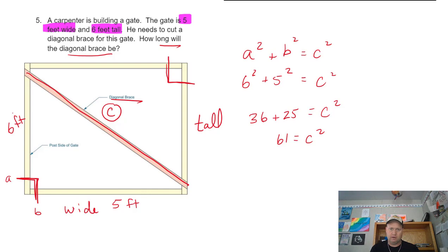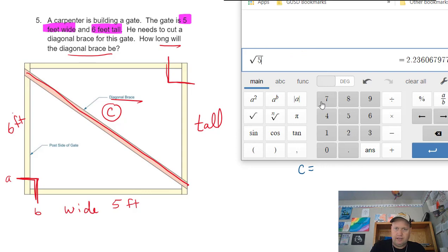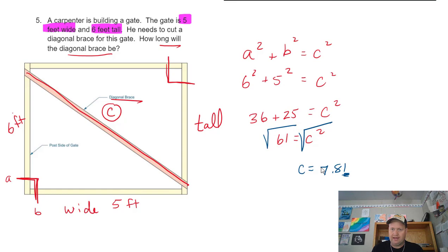Last step: take the square root of both sides. C is the square root of 61, which is a little less than 8 because 8 times 8 is 64. The square root of 61 is 7.81. That one isn't big enough to round up, so it's just 7.8 feet. That's how long the brace is to go across this gate.